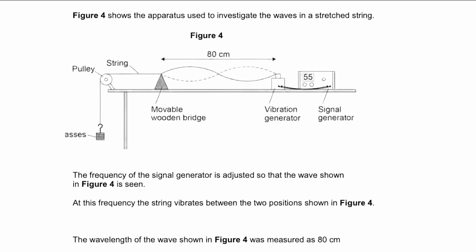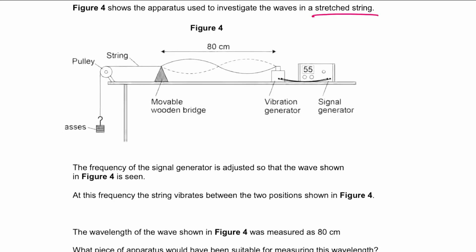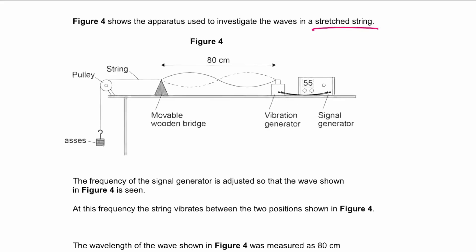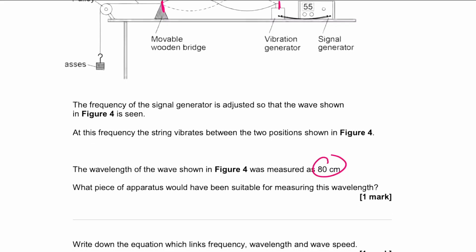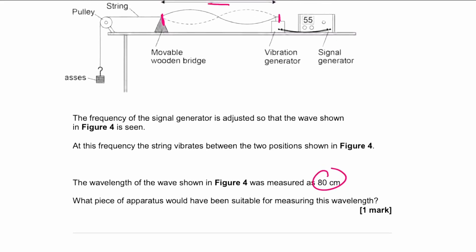The first question is about waves. Figure four shows apparatus used to investigate waves in a stretched string. The wavelength of the wave shown in figure four was measured as 80 centimeters. The first part asks: what piece of apparatus would be suitable for measuring this wavelength? Since you want to measure 80 centimeters, an appropriate answer is a meter ruler.